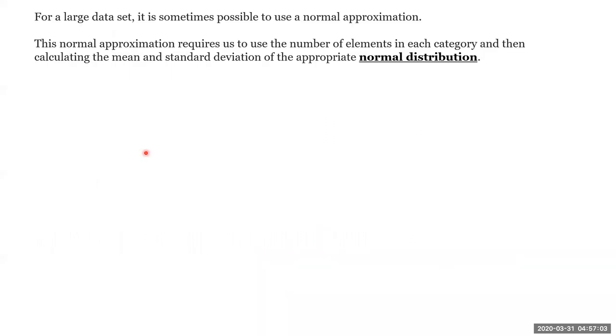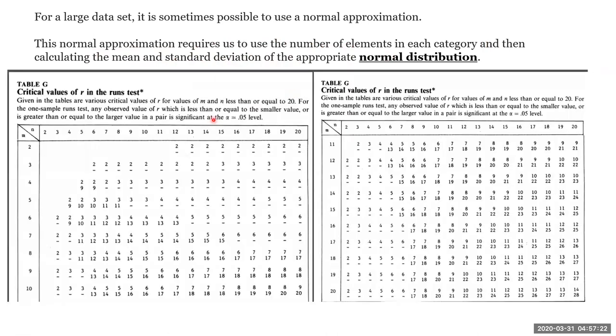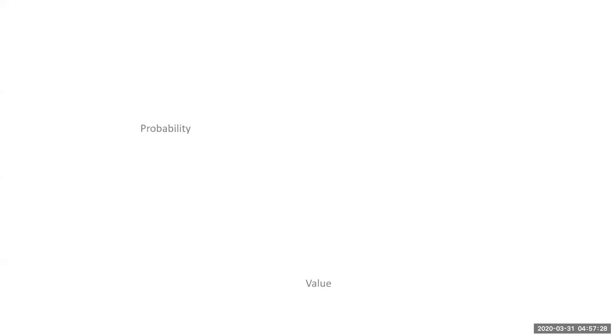Now, for a large data set, it is not possible to do the random test using tables. So then we will use a normal approximation. This requires the number of elements in each category, and then we will find out the total mean, standard deviation, etc. And we call it as a normal distribution. This is the run test table which we have used before, where 4 and 16 are obtained.